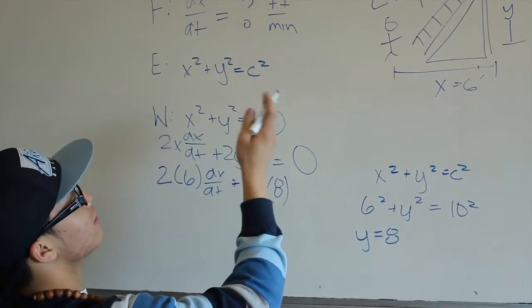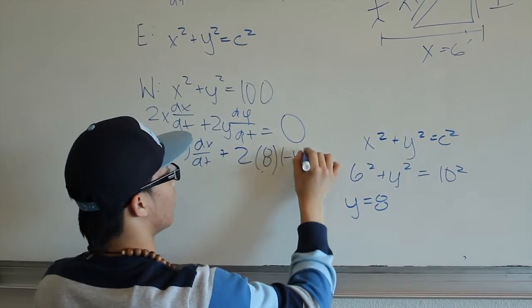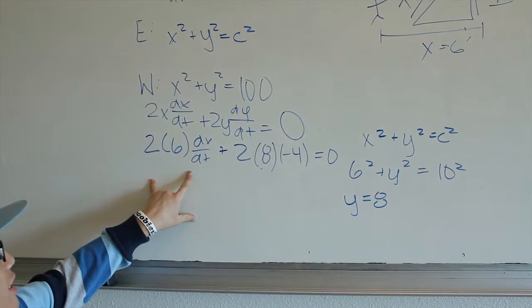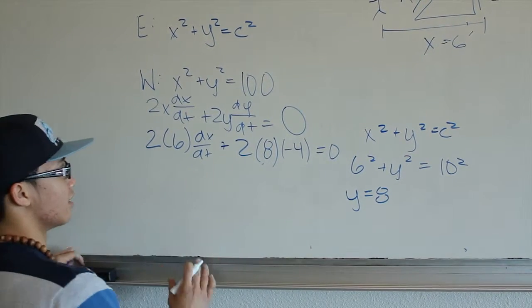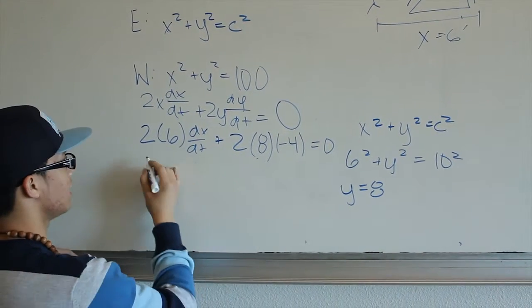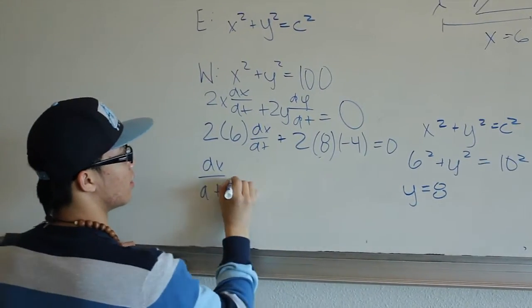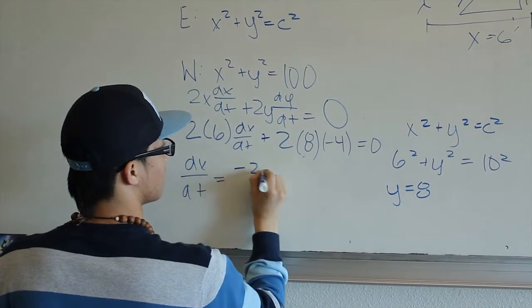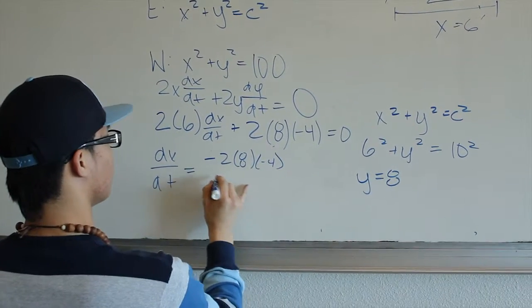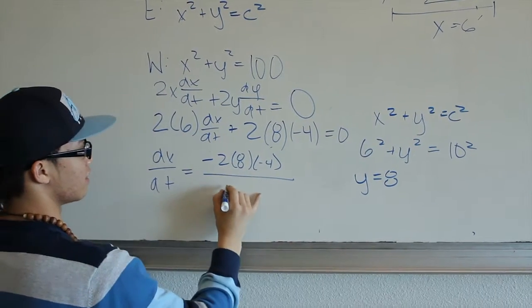And now we were given a dy dt, which is negative 4. Now we have something that we can solve for dx dt. So after changing everything in order to solve and single out for dx dt, we have dx dt equals negative 2 times 8 times negative 4, all over 2 times 6.